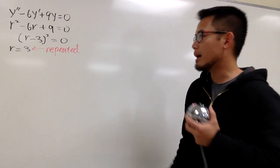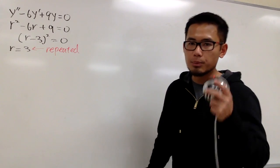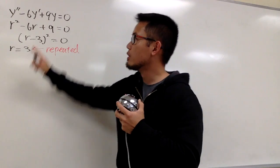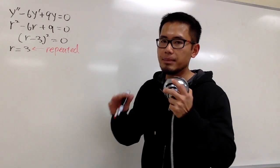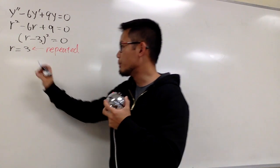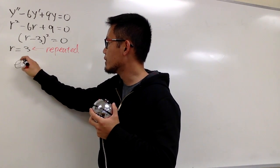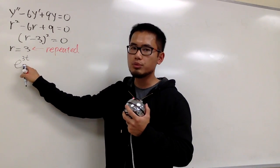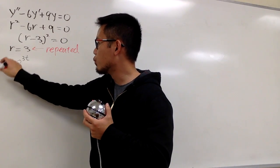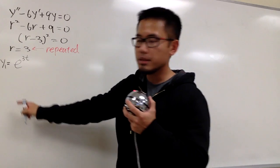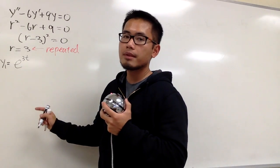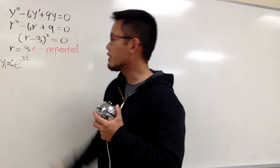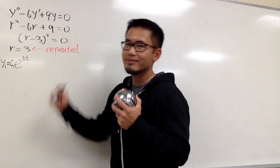The repeated root is 3 and 3, but of course we can just put down 3. Just like in the previous video, once we find an r value, we know an answer — that's the building block to the general solution. We know one of the building blocks is going to be e to the 3t, where r is 3. This is y1, and we can put down c1 in front.